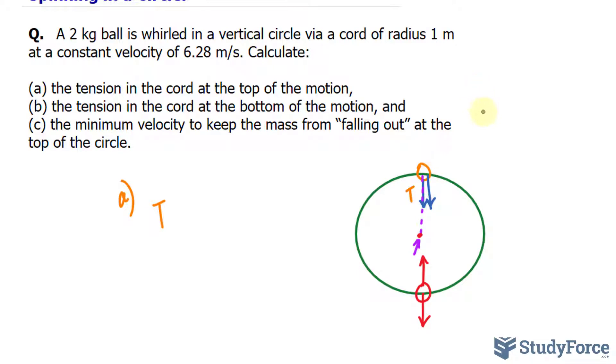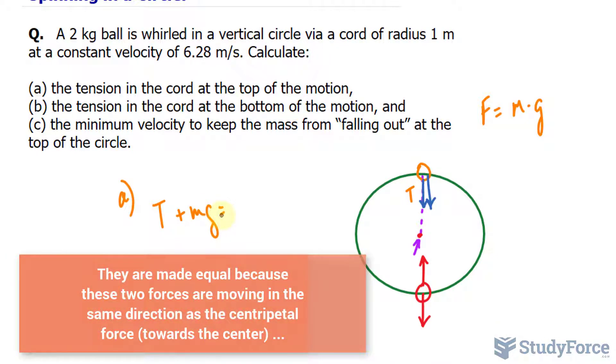Remember the force due to gravity can be represented using Newton's second law, where force is equal to m times g, and g simply represents the acceleration due to gravity of 9.8. So we'll be adding T plus mg, and making that equal to the centripetal force.